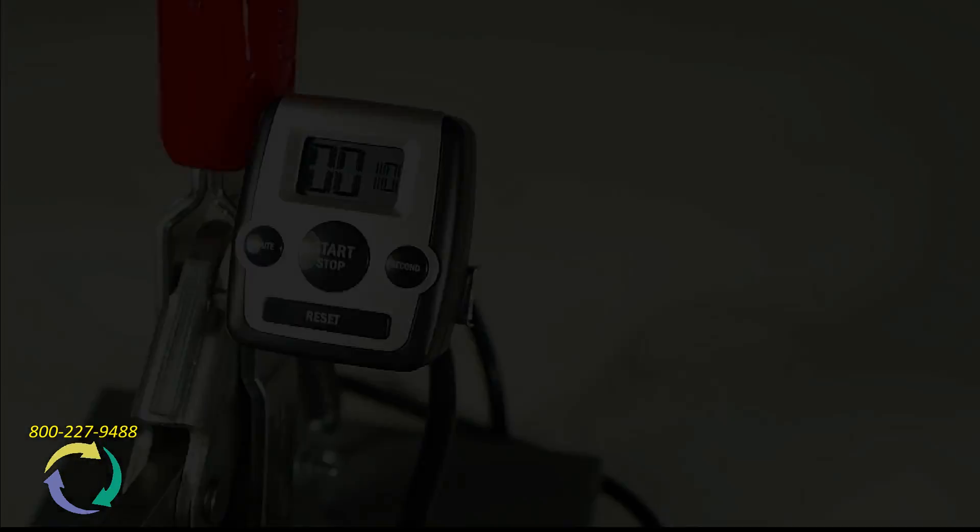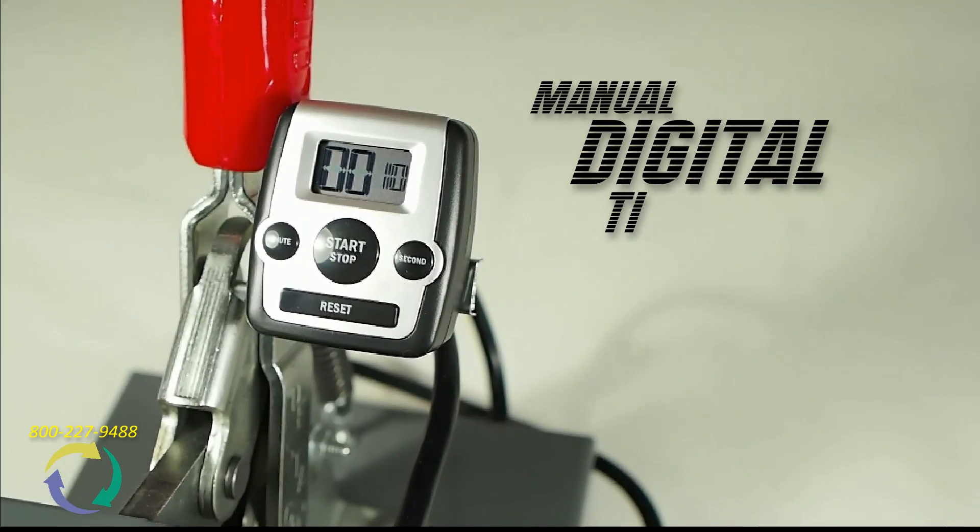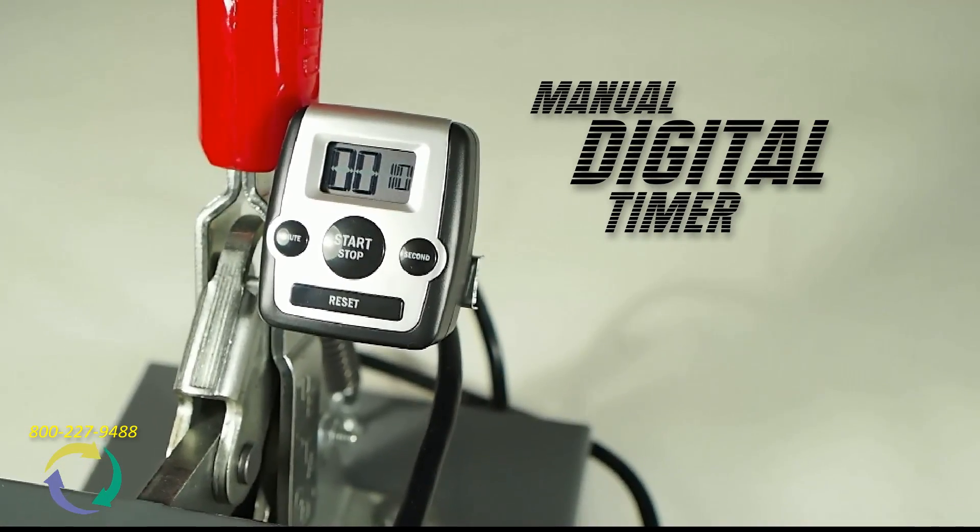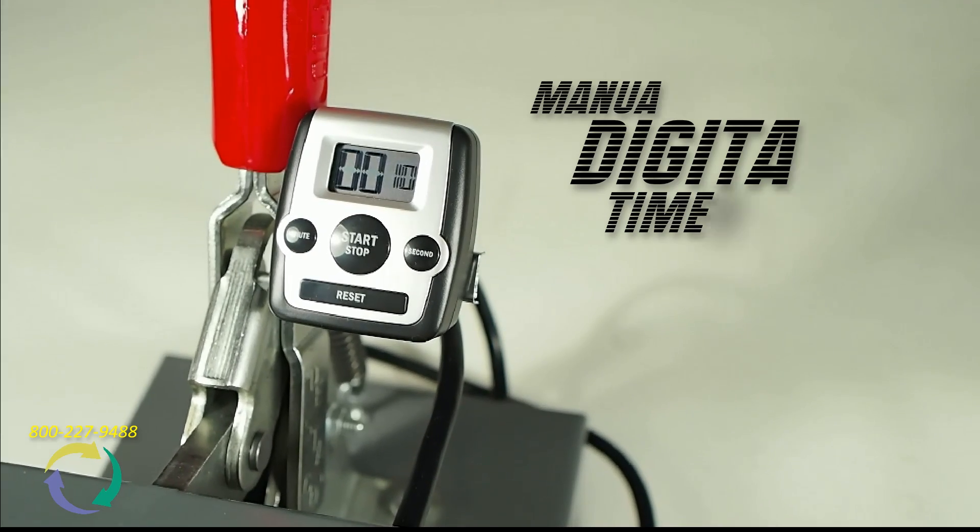This machine also comes with a standard digital timer. It's useful for tracking dwell time when applying UniTherm's garment labels and repair patches.